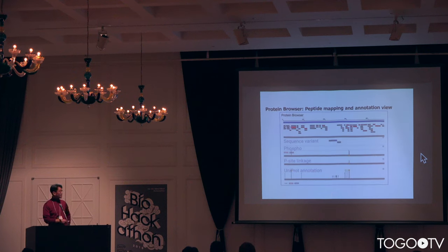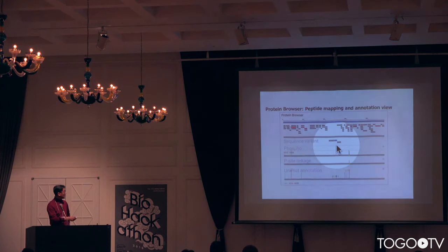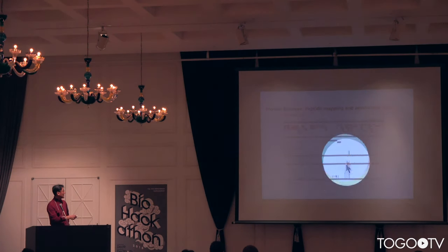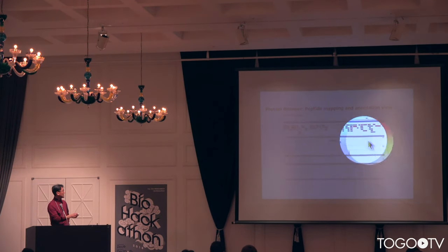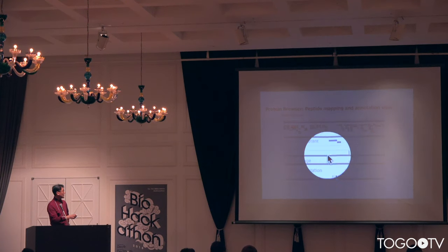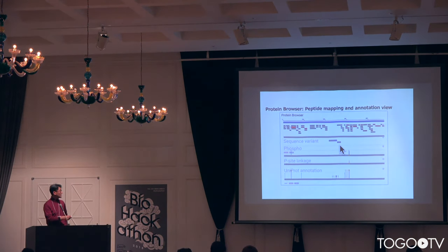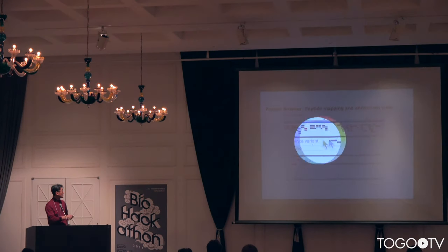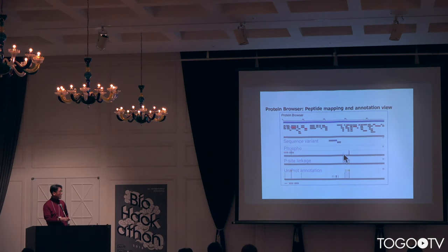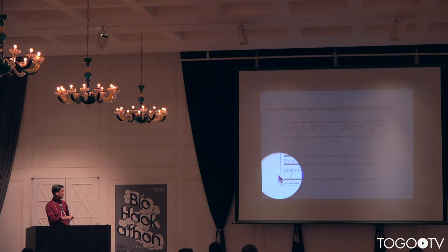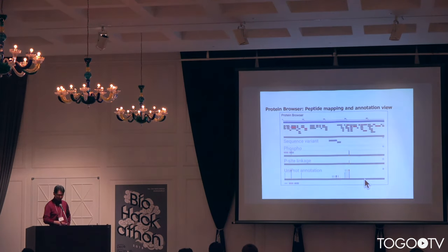One of the features of the proteogenomics type of analysis is that you can map the peptide sequence onto the protein sequence. If you have some variation in the protein sequence, you can see the sequence variant tag. You can also compare these variants to the SwissProt or UniProt annotation.